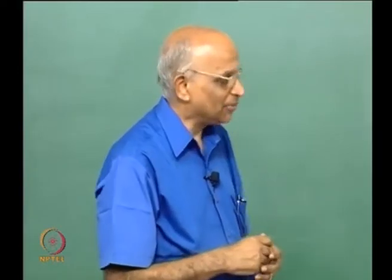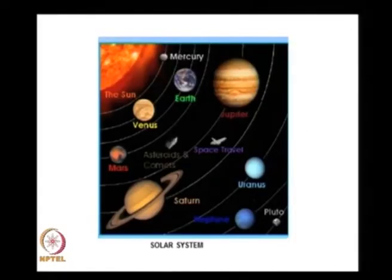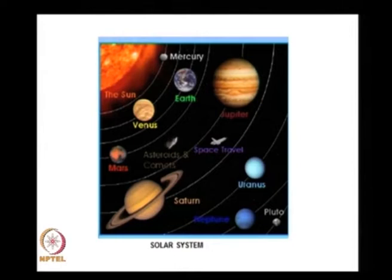In the last class, just to refresh ourselves on what we learnt, we told ourselves there are something like eight planets revolving round the sun. We said these planets consisted of Mercury, Venus, Earth, Mars, Jupiter, Saturn, Uranus and Neptune. We also told ourselves there was one planet called Pluto which is no longer considered to be a planet because it is not dense. There is a lot of interest in exploring the different planets, and I will take two examples.